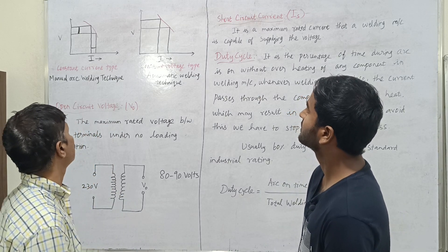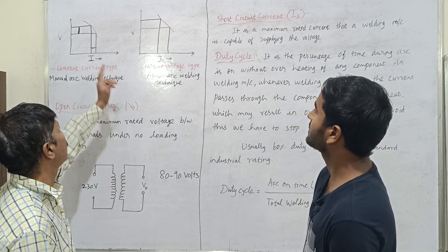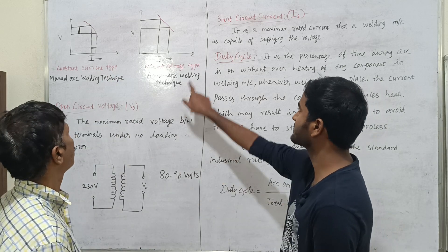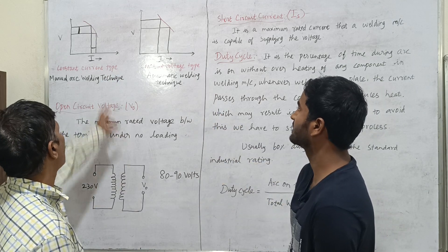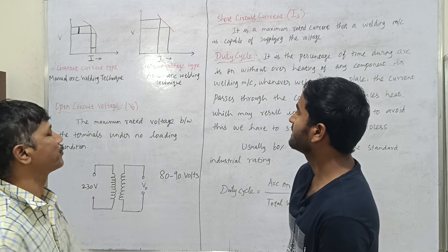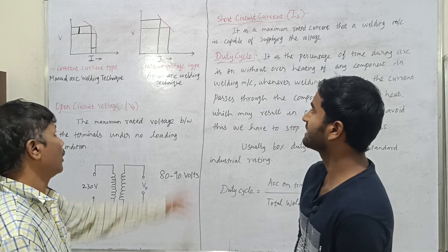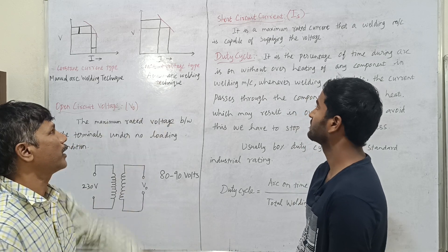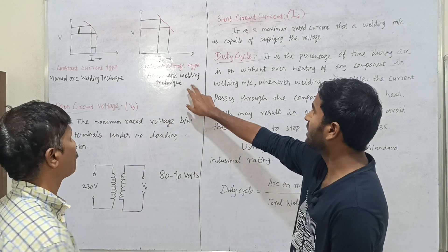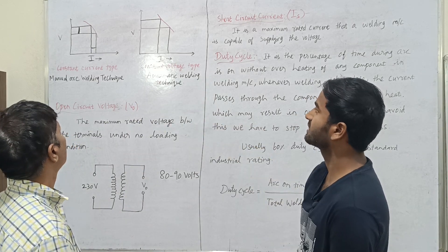We have two examples. The first is constant current type and constant voltage type. We use the constant current type for manual arc welding technique, and we use the constant voltage type for automatic welding technique.